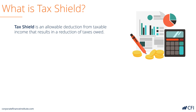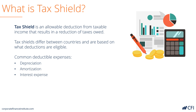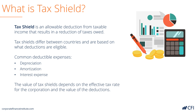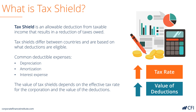A tax shield is an allowable deduction that saves you money on a tax bill. They differ between countries based on what's eligible or legal in the jurisdiction, but here are some examples of the most common tax shield deductions: depreciation expense, amortization expense, and interest expense. The value of these tax shields depends on how high the effective tax rate is and the value of the deductions for the company.